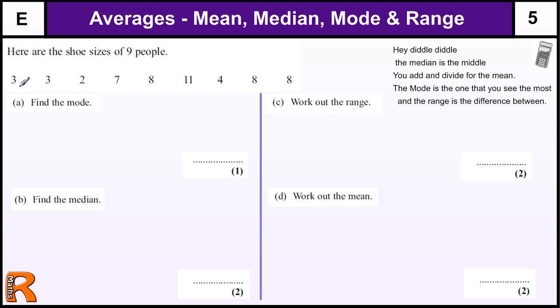Which number do we see the most? Well, we see two threes, but we see three eights. So that is the most common.